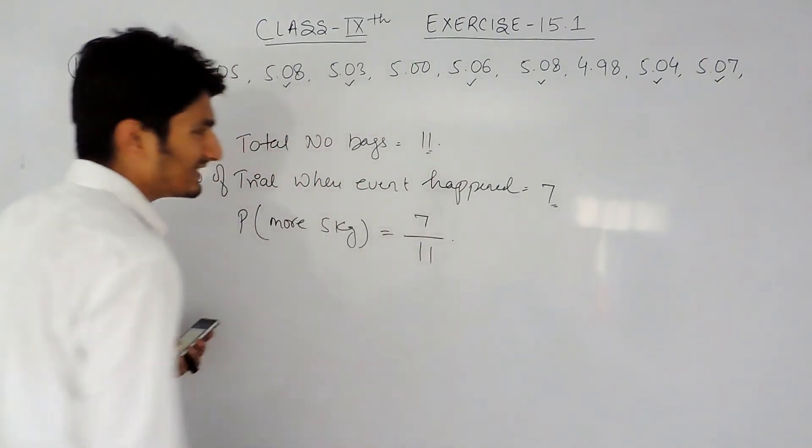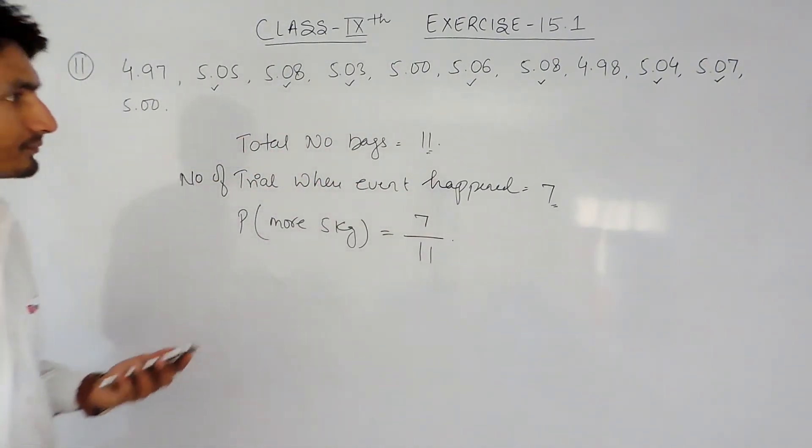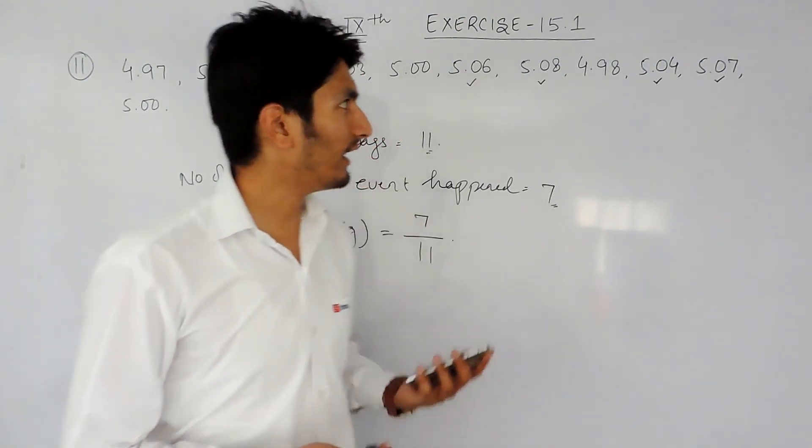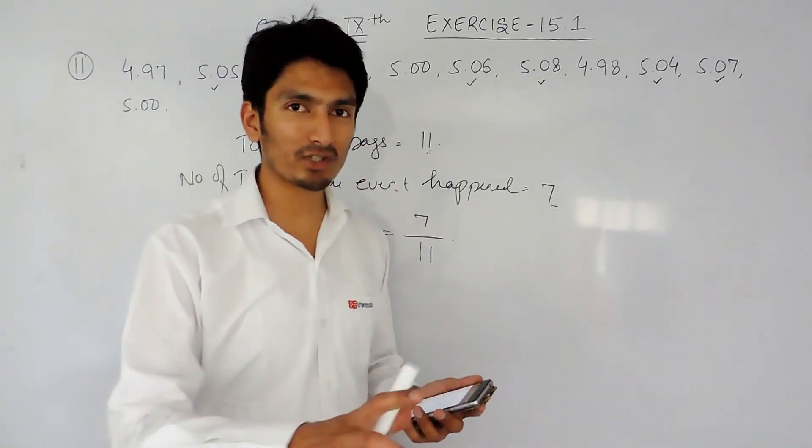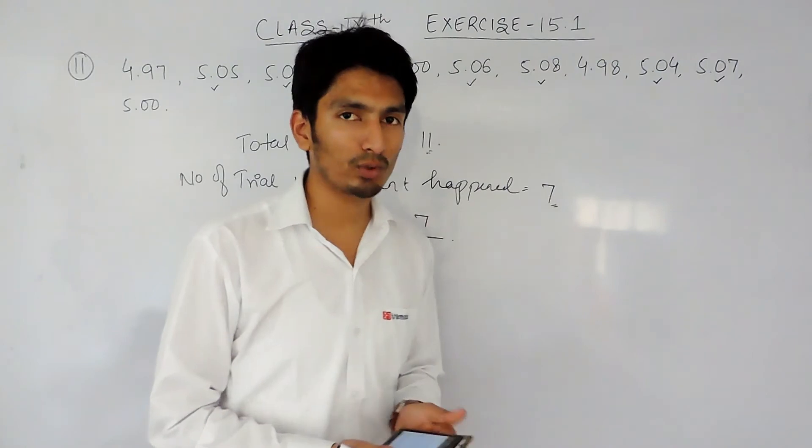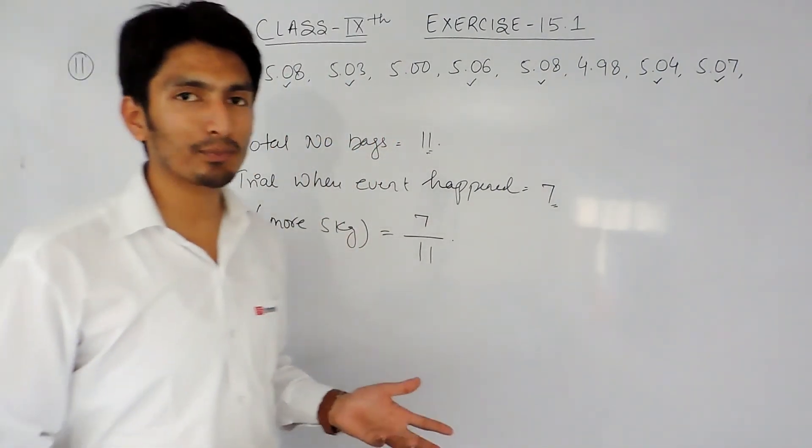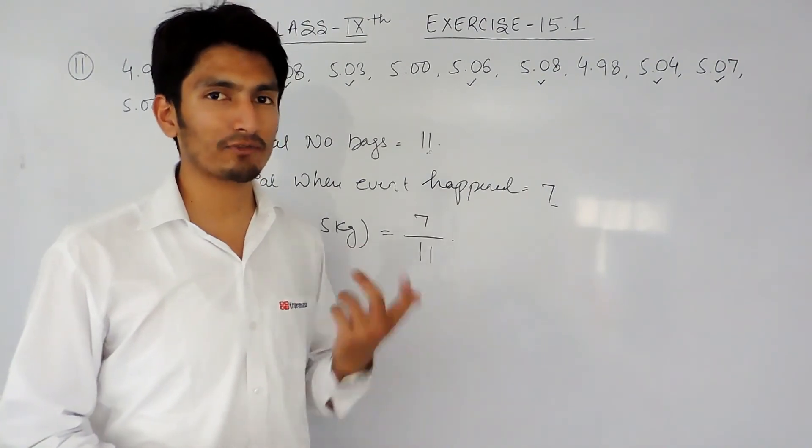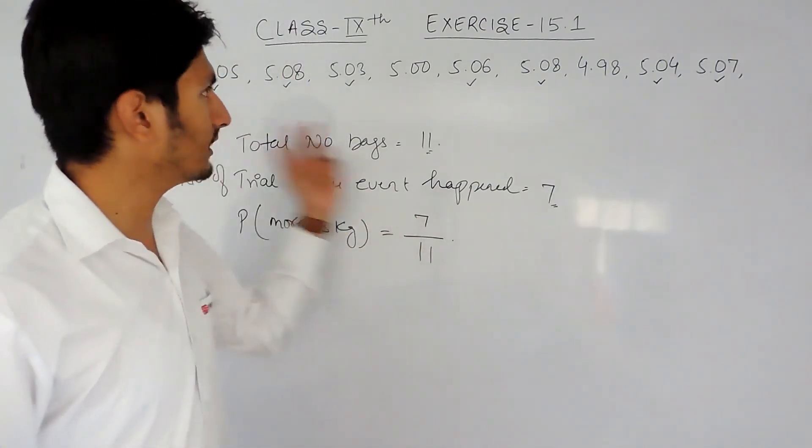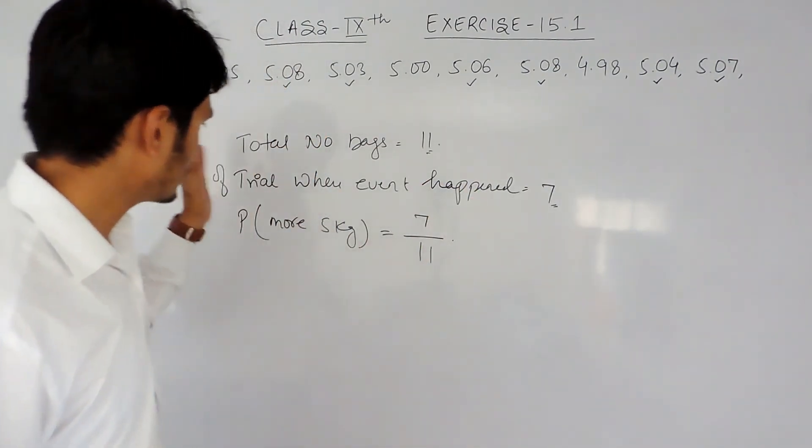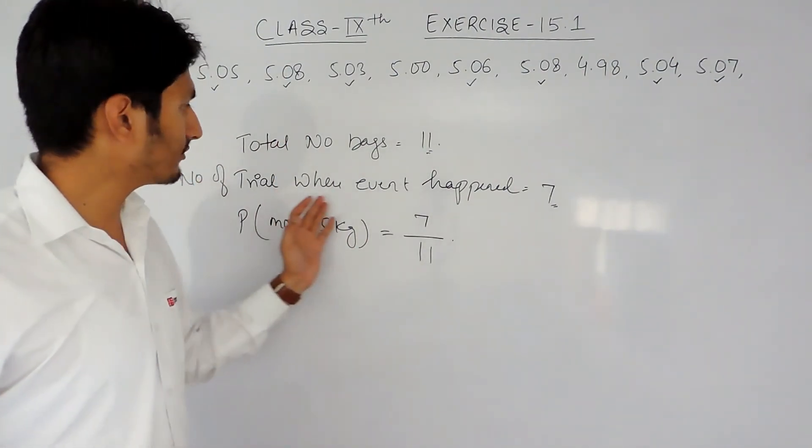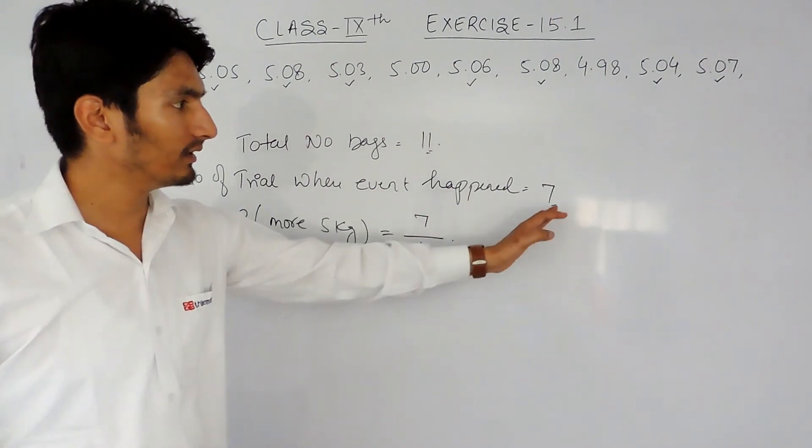So this is how you can solve this question. I haven't written the question because the question is too long, it won't fit on this board. I hope you can see the question from your book only. I have written the important data and this is the solution. The total number of bags are eleven and the number of trials in which this event is occurring is seven.